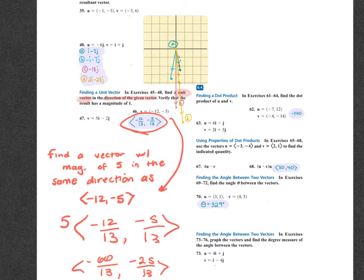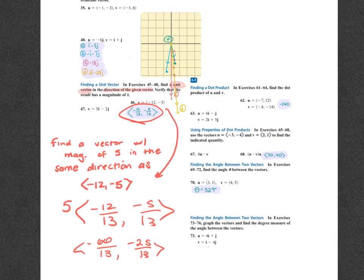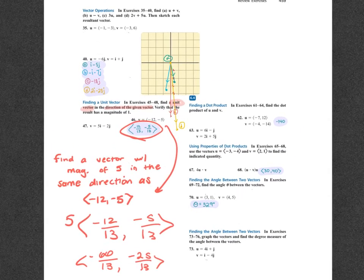All right, then we went to dot product — all those properties of dot products — then we went to angle between, like number 70. Make sure you can graph the vectors and find the sum using the graph, all that stuff we went over yesterday.